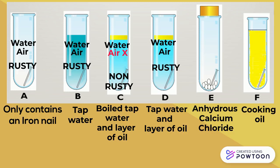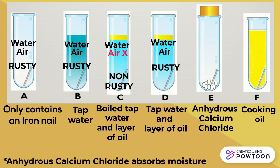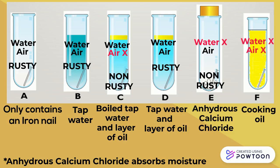Test tube E contains anhydrous calcium chloride, which absorbs moisture, so the inside of test tube E is totally dry. So nail E is not exposed to water but only exposed to air. So nail E does not rust after one month. Nail F is immersed in cooking oil. There is no water and no air in cooking oil, so iron nail F does not rust after one month.